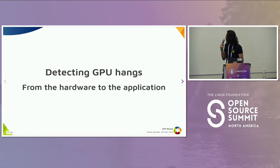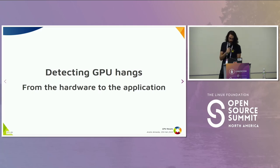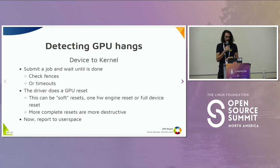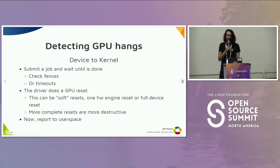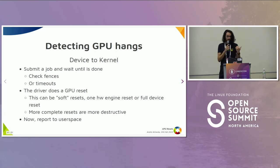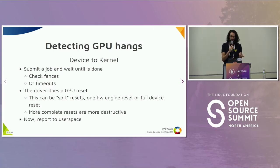Now I'm going to show how we detect GPU resets from the hardware until it reaches the application. Basically, in DRM Linux kernel drivers, you submit jobs to the device and then later you can check if your memory fences have been reached or if the timeout has expired. The Linux kernel driver can do a reset if it finds out that a job is taking so long to run that it might be stuck. You can't even be sure of that, but you assume it's stuck and take action.